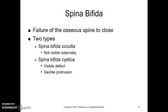Spina bifida is the most common of the neural tube defects and comes in two different forms. Spina bifida occulta is less severe — the nerves are not affected. Spina bifida cystica has an actual visible protrusion, with two subtypes: one where it's just the meninges and spinal fluid, and the other where the spinal nerves are part of the defect.